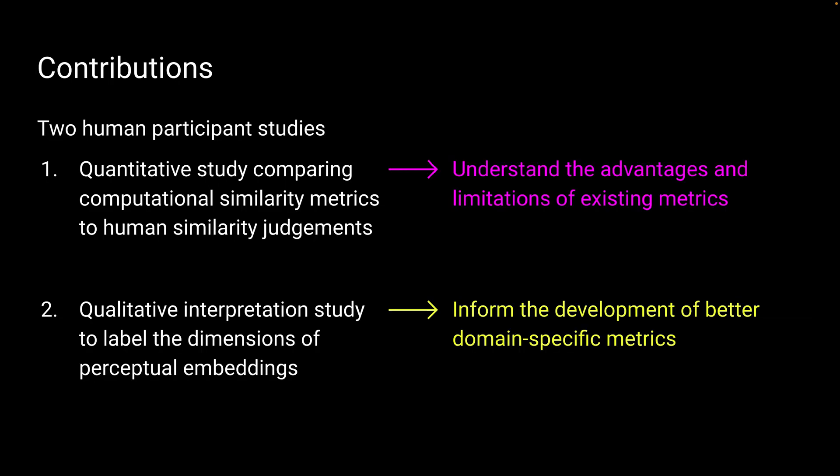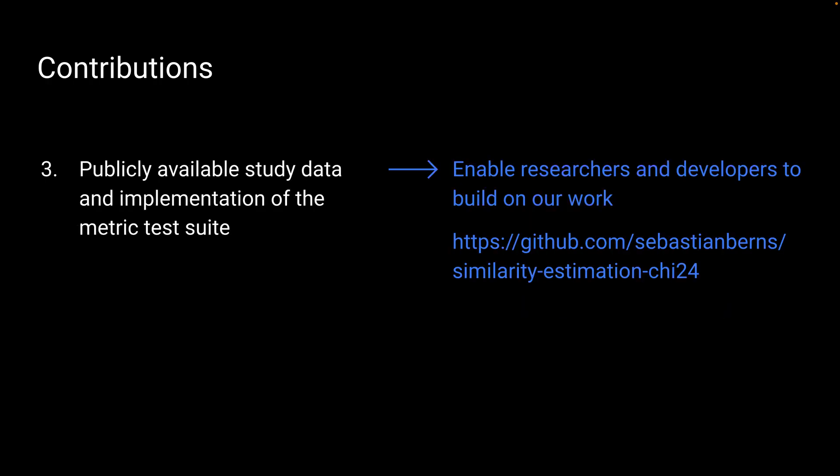To wrap up, these are our contributions. We performed two human participant studies. The first helps us to understand the advantages and limitations of existing metrics. And the second informs the development of better domain-specific metrics. Finally, we also make publicly available our study data and the implementation of the metric test suite. This helps researchers and developers to build on our work, and it's available on this link.